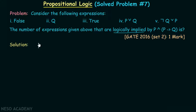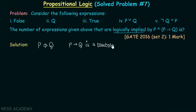If we say p logically implies q, what does it really mean? P logically implies q simply means that p implies q is a tautology — or equivalently, valid.